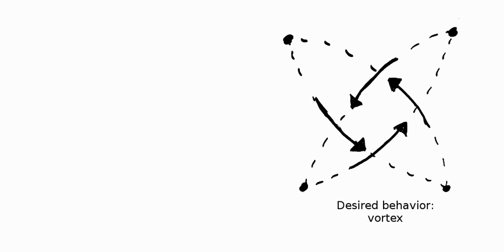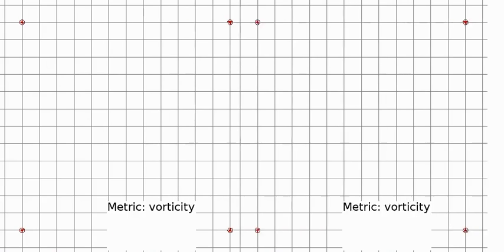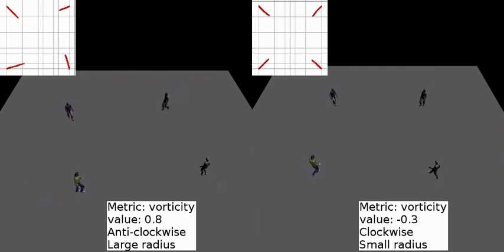In our second example, we want our agents to behave in a vortex-like pattern. To achieve this, we use the vorticity metric. Here the sign of the target value dictates the rotation direction, while its absolute value dictates the size of the vortex's radius. Thus, on the left we have an anti-clockwise large radius vortex, while on the right we have a clockwise smaller radius vortex.